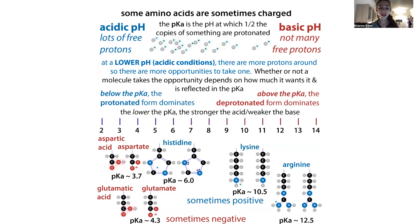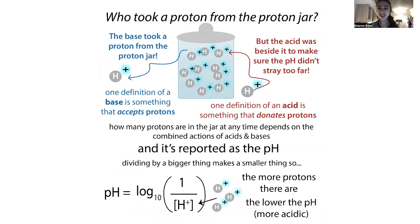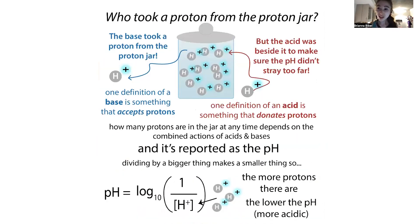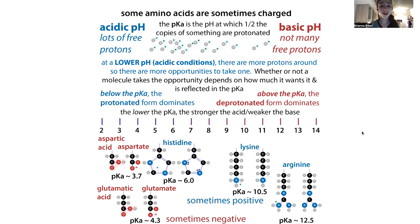Whether or not they're charged is going to depend on pH. The lower the pH, the more acidic the solution, the more free protons are available. These positively charged protons can latch on and make the negative ones neutral and the neutral ones positive. So the lower the pH, the more positively charged the protein is going to be. The higher the pH, the fewer protons are available, so the protein will be either neutral or negatively charged — more basic conditions mean more negatively charged protein.